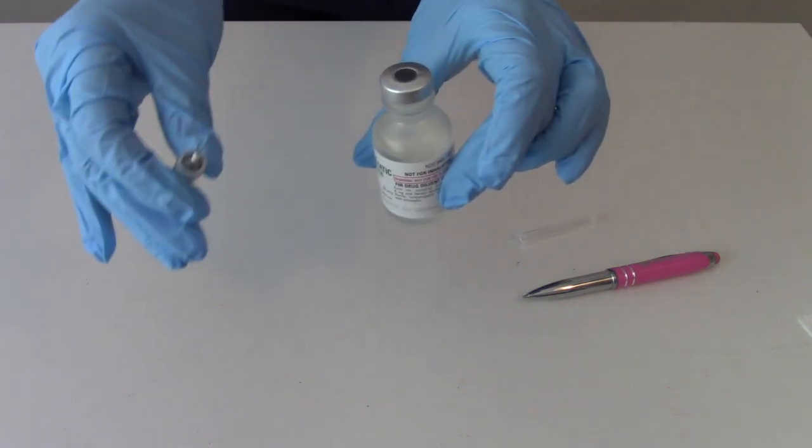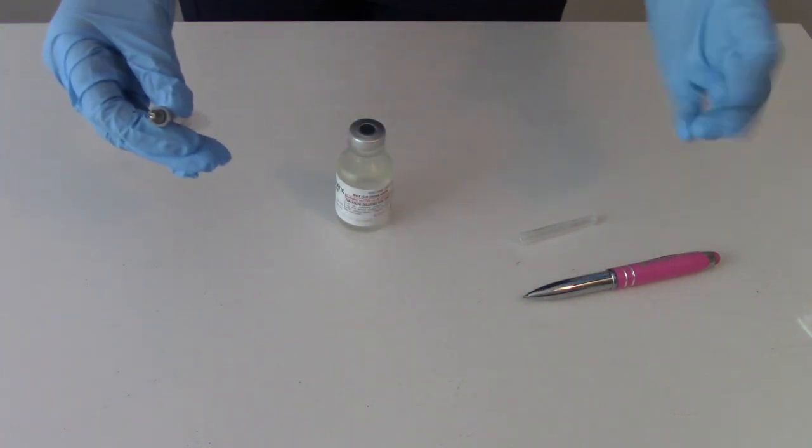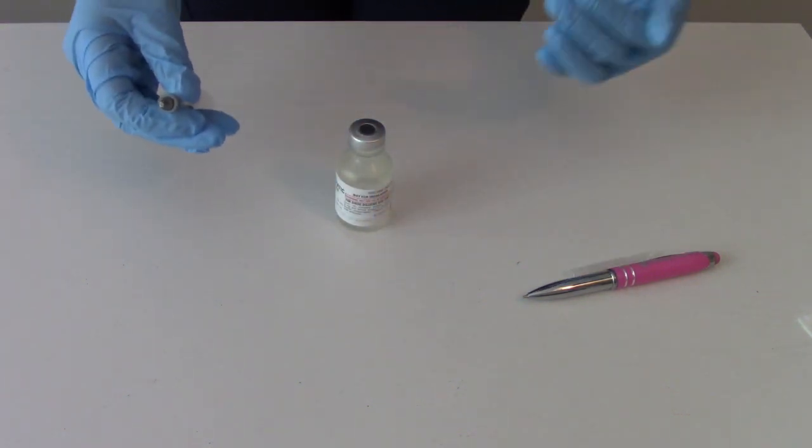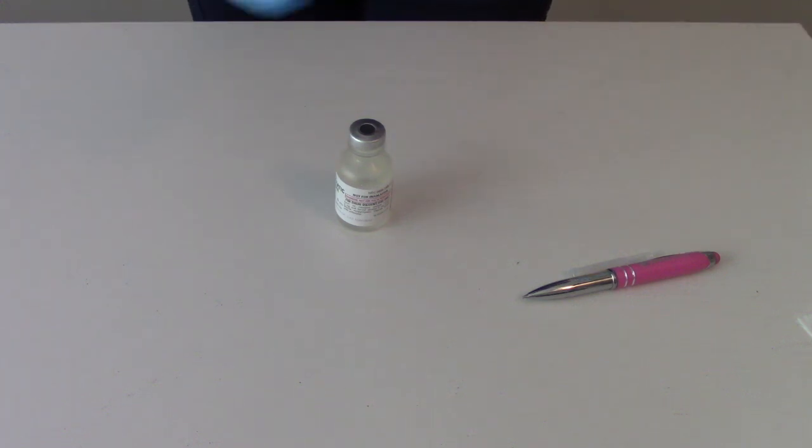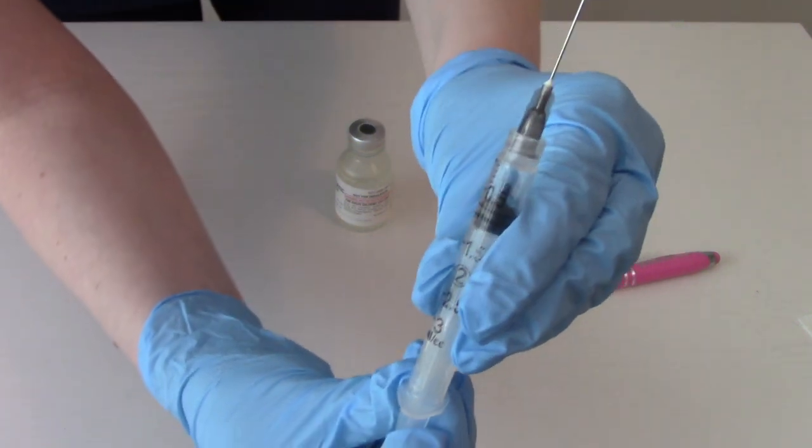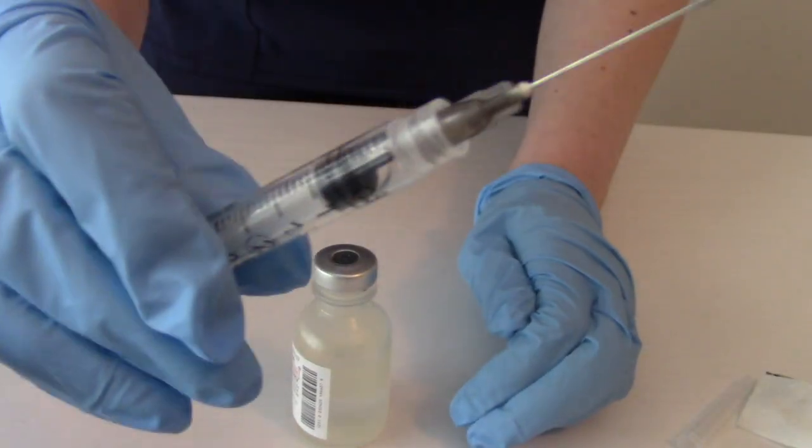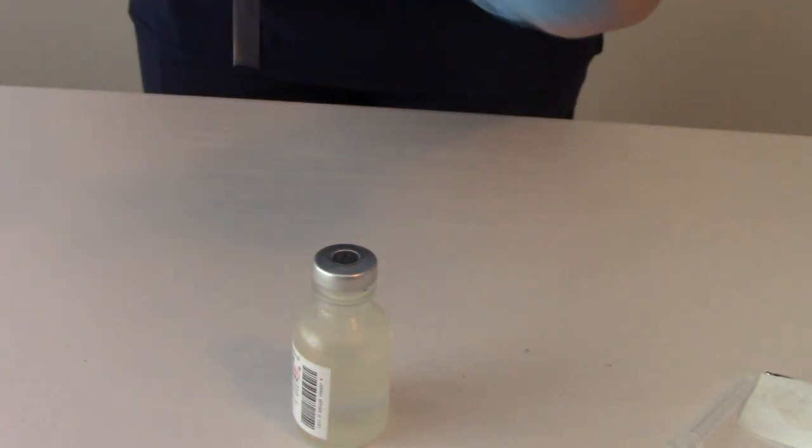Before we draw up from the vial, we need to instill air into the vial. Let's say that our medication record says we are giving 0.5 mLs. So we're going to draw back 0.5 mLs. Now we're ready to inject the air into the vial.